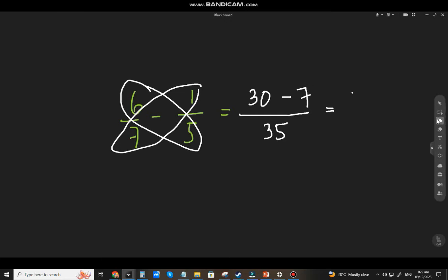30 minus 7, that will be 23 over 35. And that is already the lowest term because 23 is a prime number. You cannot reduce it anymore.